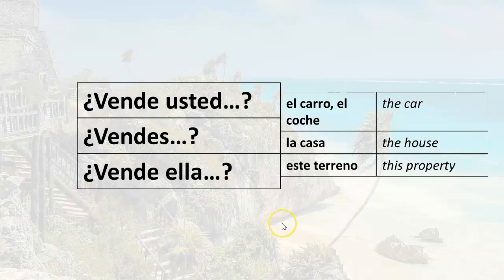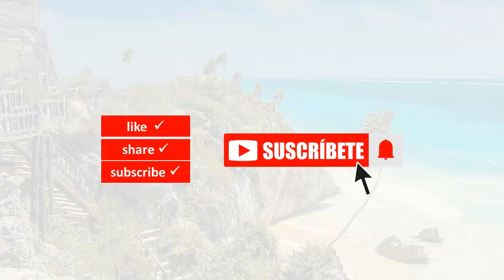And there you have it — that's how you ask yes or no questions with the verb vender. Remember: use inversion — verb first, then subject pronoun, followed by the noun or direct object. That's it for this lesson. Thanks so much for watching. If you found it helpful, I would appreciate it if you'd give it a like. To continue learning, click on the video that appears on your screen. See you soon. Hasta pronto.